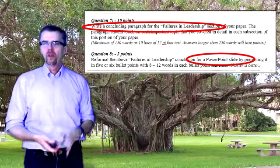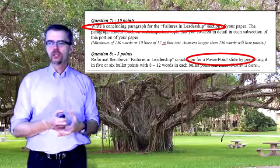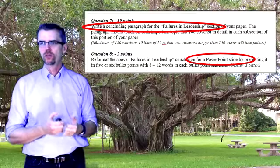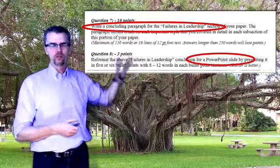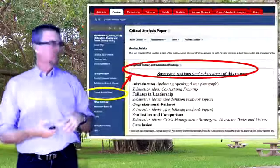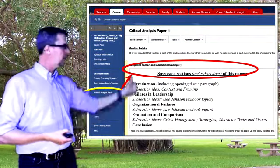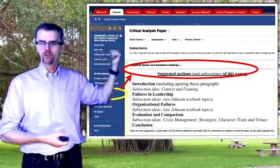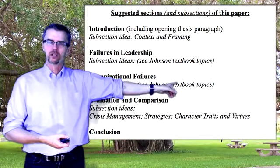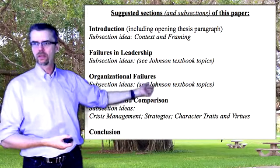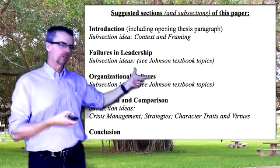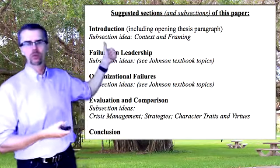For question number seven, worth ten points, you need to write a concluding paragraph for the failures in leadership section of your paper. The paragraph should touch on each important topic you covered in detail in each subsection of this portion of your paper — 150 words, maximum 250 words. For question number eight, give me the five or six bullet points for your PowerPoint slide. When you click on critical analysis paper in Blackboard, you'll see the section headings — the failures in leadership section is right there, and the subsections come from Johnson textbook topics related to your chosen topic.